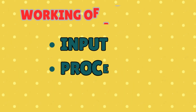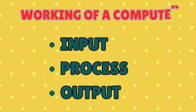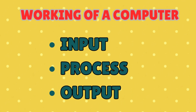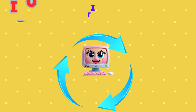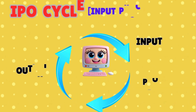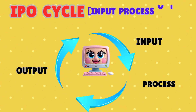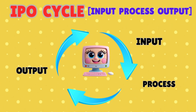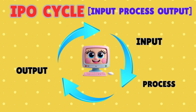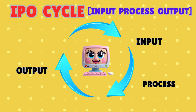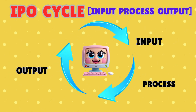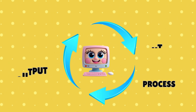IPO stands for Input, Process, Output. The IPO cycle is a system that consists of input, output, and the steps required to change the input into output.